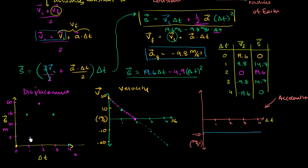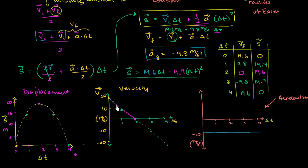If you plot the displacement versus time, you get a downward-opening parabola. The velocity graph is a downward-sloping straight line, and the acceleration is constant. The key insight is that velocity decreases at a constant pace the entire time — that's because the rate at which velocity changes is the acceleration, which based on our convention is negative, giving a negative slope of negative 9.8 meters per second squared.